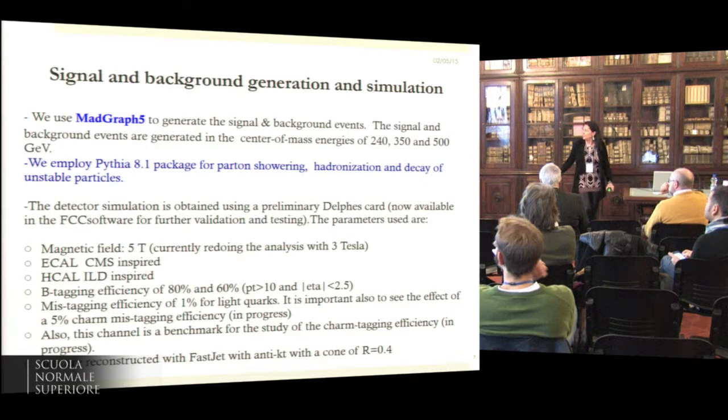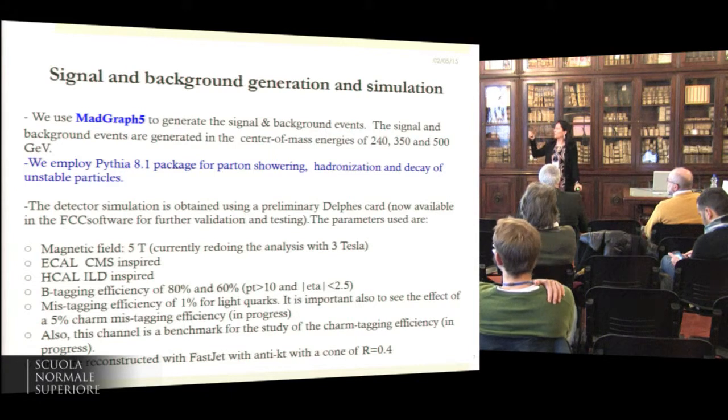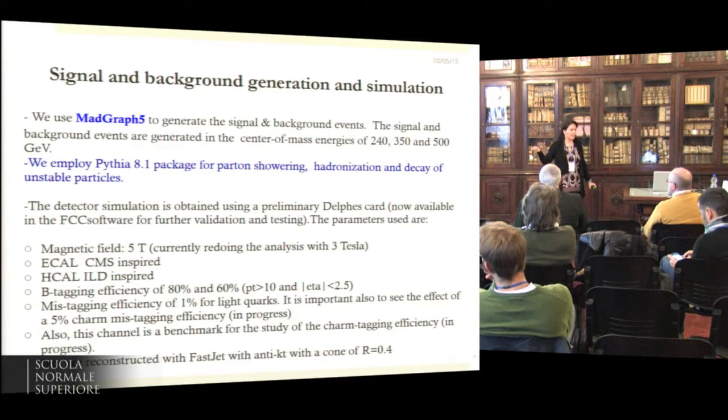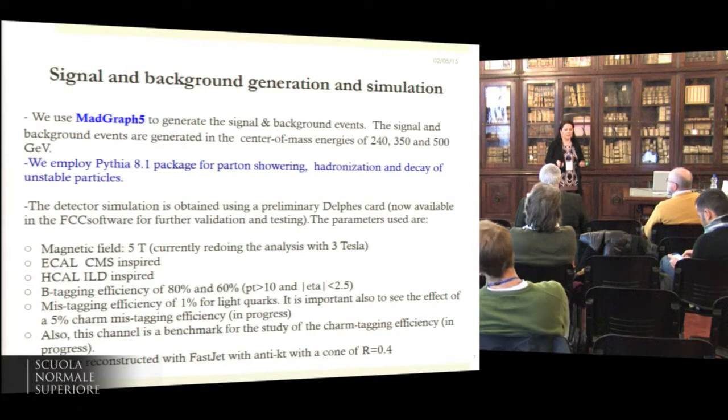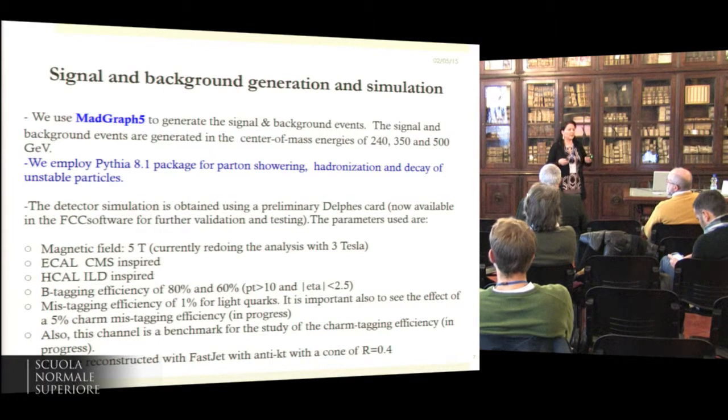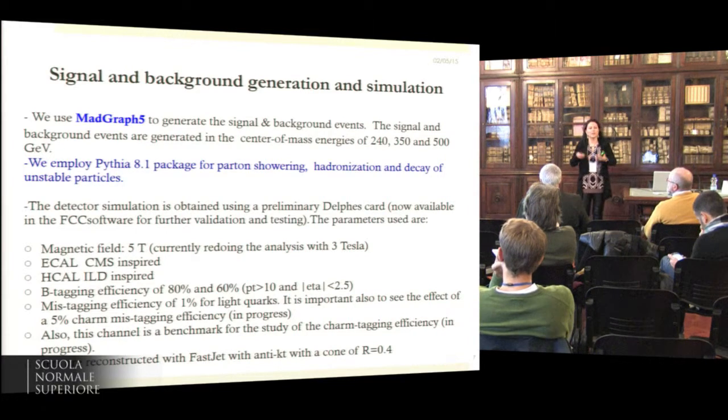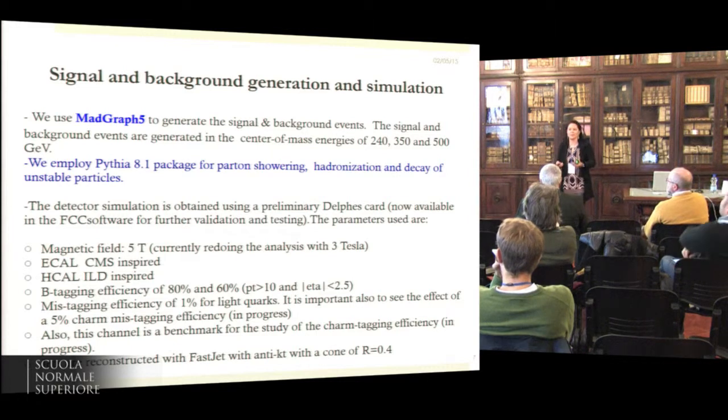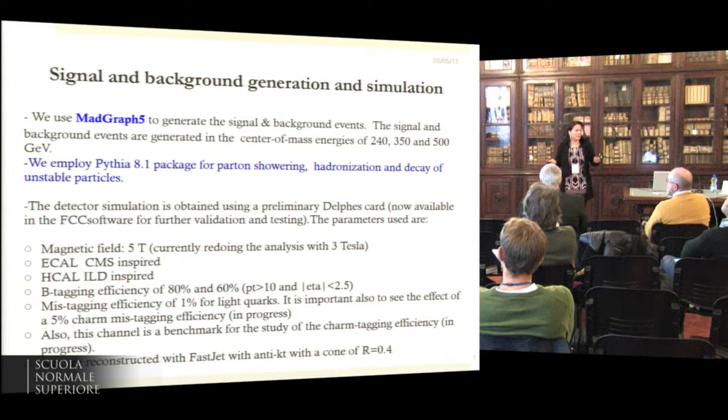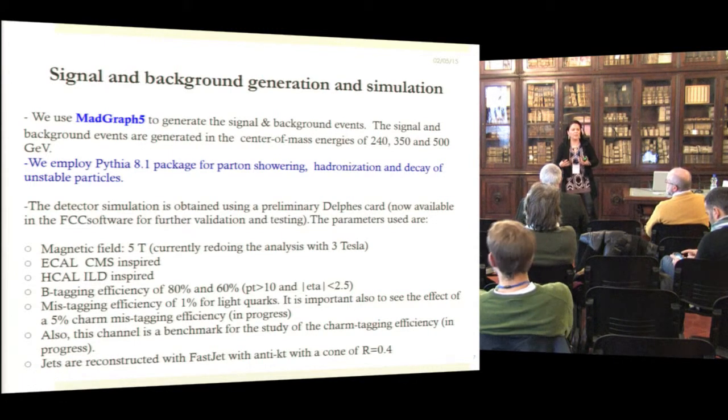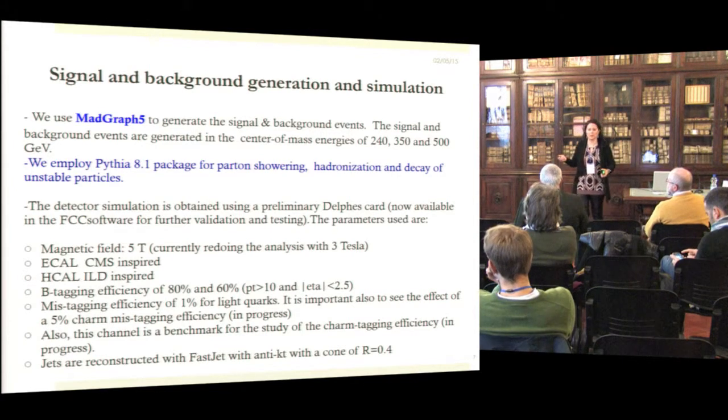The other important thing to note is that in this iteration of the analysis the signal was generated with MadGraph, and they've tried to use this Delphes card that we've been putting together, taking inspiration from the ILD detector and some efficiency and performances we found around to have a first Delphes card that we can use to do physics studies. This is far from being the optimal one for any choice of detector, but since Delphes is very easy to modify, it's a very good beginning to show that we have something we can work with for detector performance.